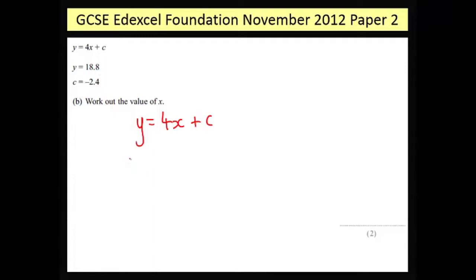Well, we know y is 18.8, so we'll write that where y is. We don't know x so we'll leave that as 4x, but we do know c again—it's negative 2.4. When you add a negative number, that's just the same as subtracting it, so let's subtract 2.4 this time.